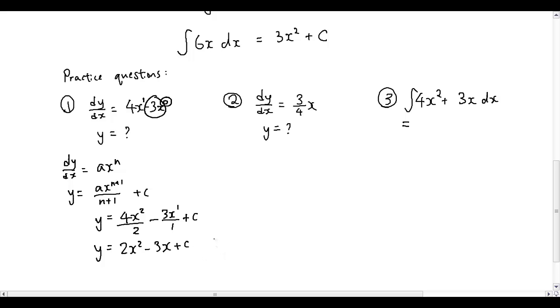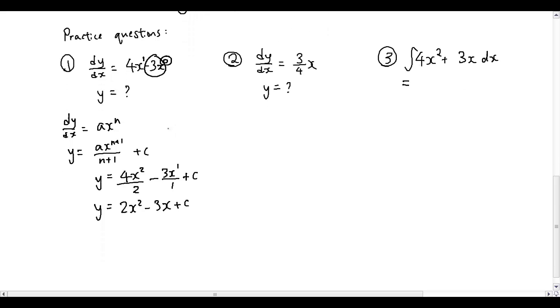So that's the anti-derivative of dy over dx equals 4x minus 3. Now if you want to test whether you're correct, you can simply differentiate this function again. So dy over dx. So this is a little test. dy over dx is equal to 4x minus 3. So it matches what we had before.